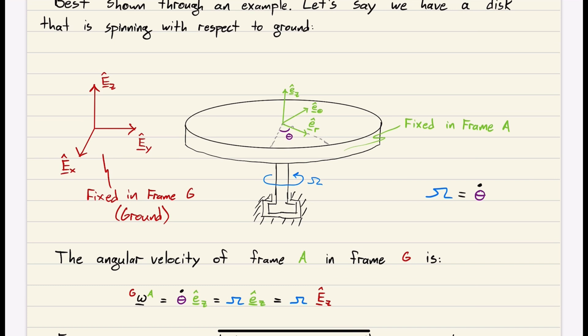What is the angular velocity of frame A in frame G? The angular velocity of A in frame G equals how our green basis changes with respect to our red basis. We can see it's spinning about that EZ direction by theta dot, the rate at which this angle is changing. So it's spinning about EZ at a rate of omega. Therefore, theta dot EZ or omega EZ is the angular velocity of frame A in G.